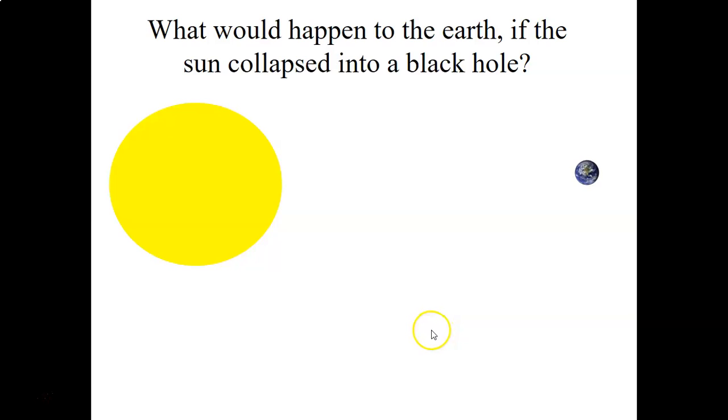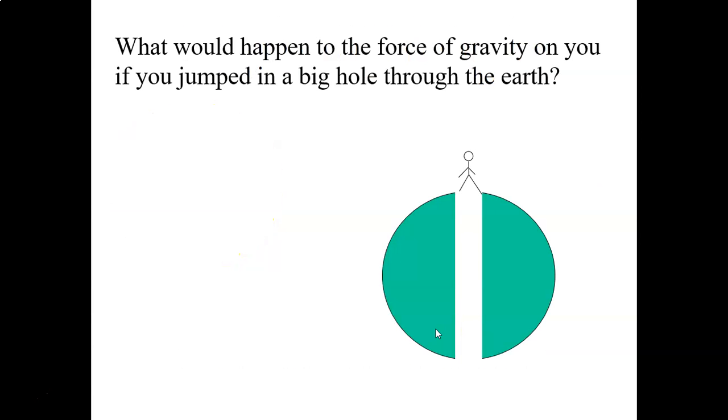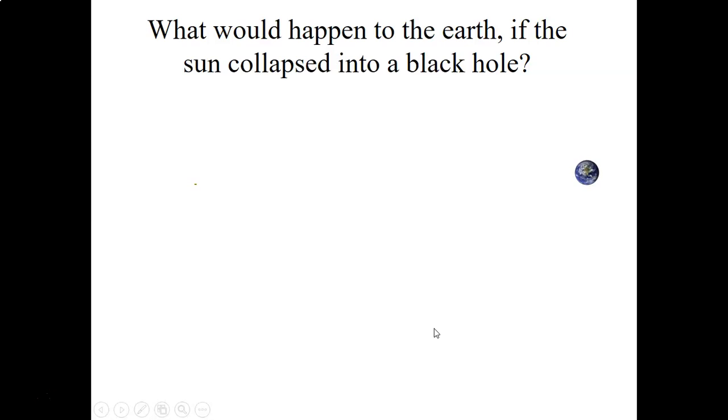Now what would happen to the Earth? We're orbiting the sun, minding our own business, and the sun suddenly collapses into a black hole. What happens to the Earth in its orbit? Does it keep orbiting or does it get sucked in? Well, what happened to the force of gravity on the planet when the sun became a black hole? Did the mass of the Earth change? No. Did the mass of the sun change? No. It didn't get more massive. It just collapsed. Did the distance between the center change? No. So we would go on orbiting it like nothing changed. The only difference is it would be darker here. So we would get awfully cold.